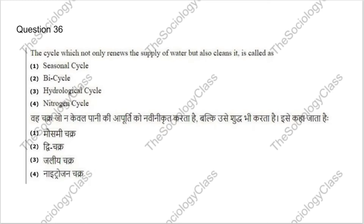Question 36: The cycle which not only renews the supply of water but also cleans it is called — seasonal cycle, bi-cycle, hydrological cycle, or nitrogen cycle? The correct answer is C — hydrological cycle. This is a question from the environment section, so basic environment knowledge is required for the exam.